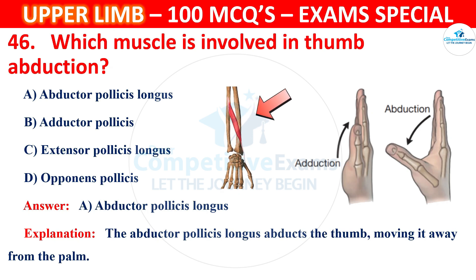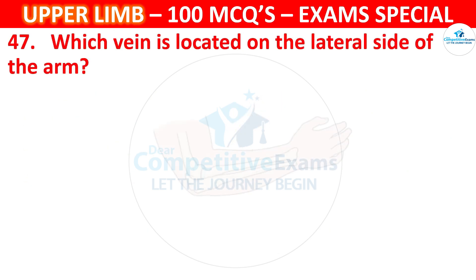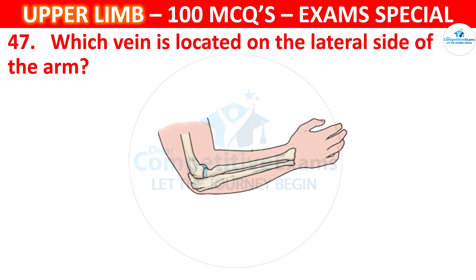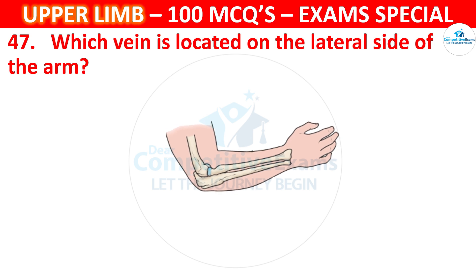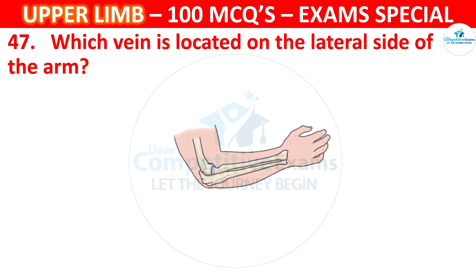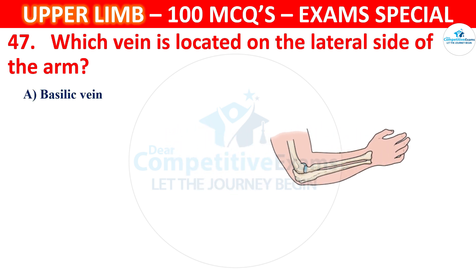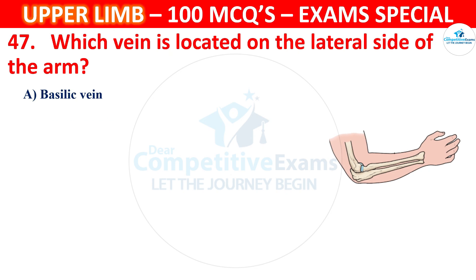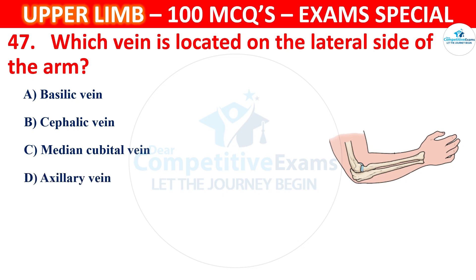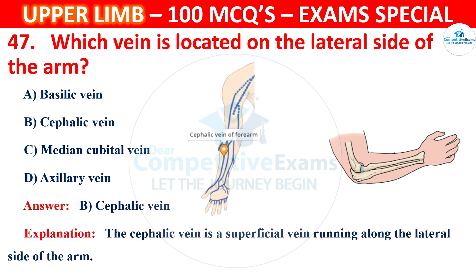Question number 47: Which vein is located on the lateral side of the arm? Options: basilic vein, cephalic vein, median cubital vein, or axillary vein. The correct answer is B, cephalic vein. The cephalic vein is a superficial vein running along the lateral side of the arm.